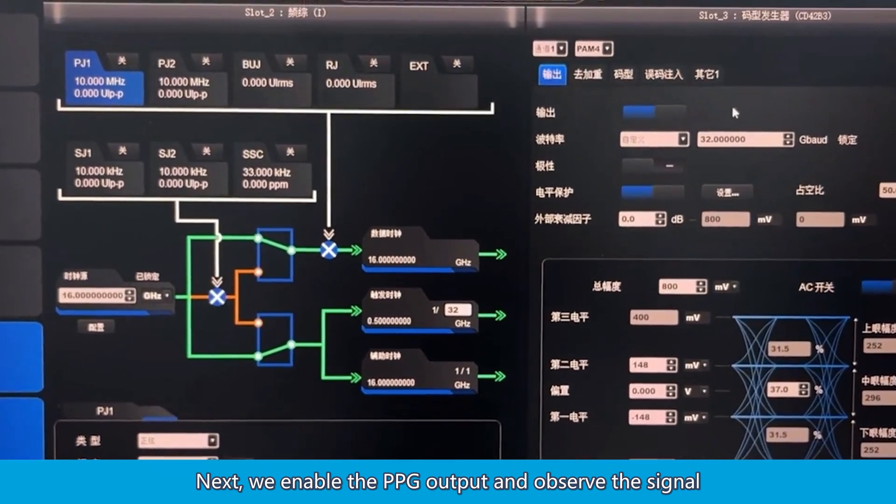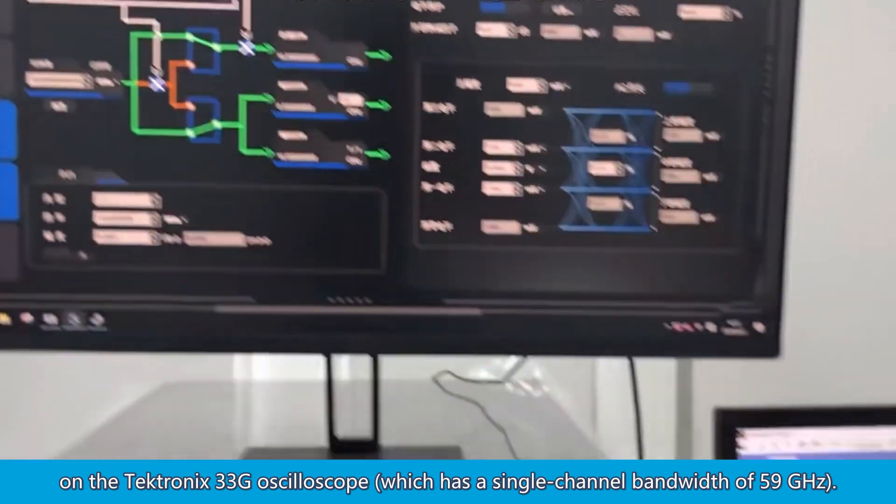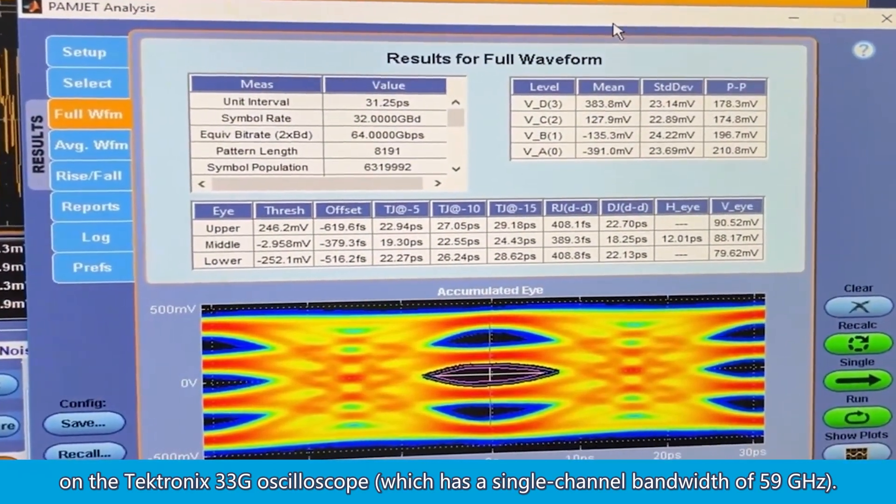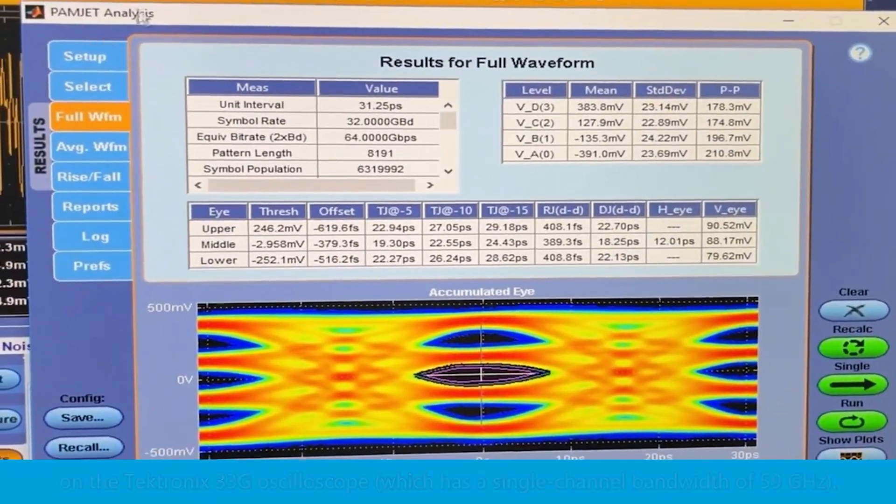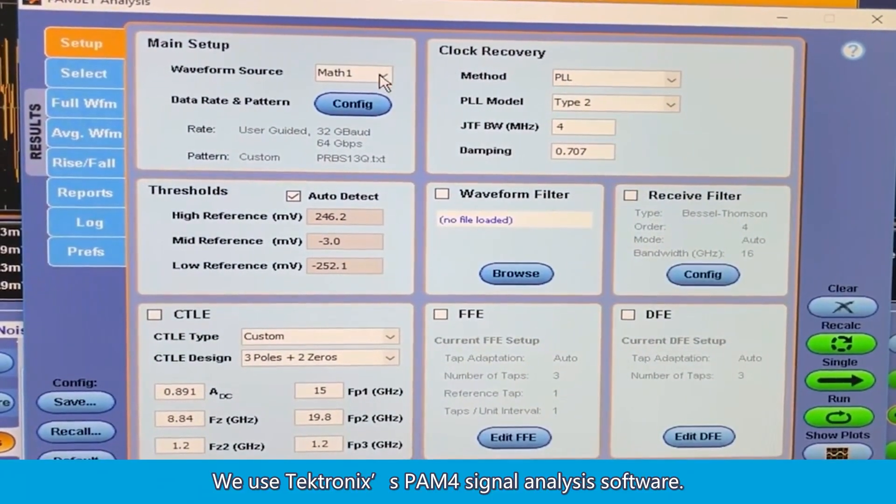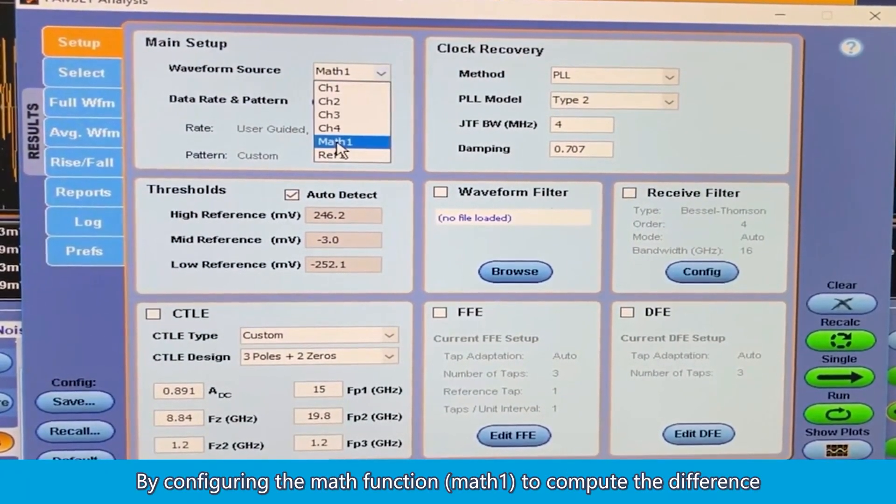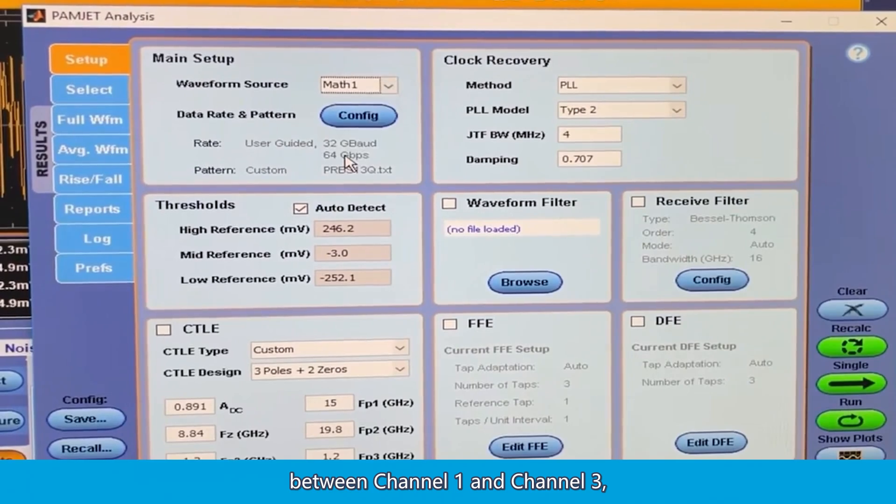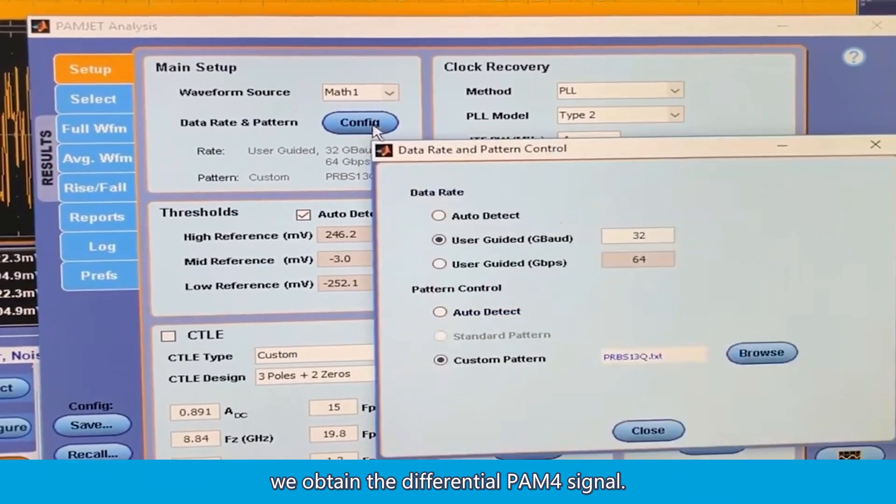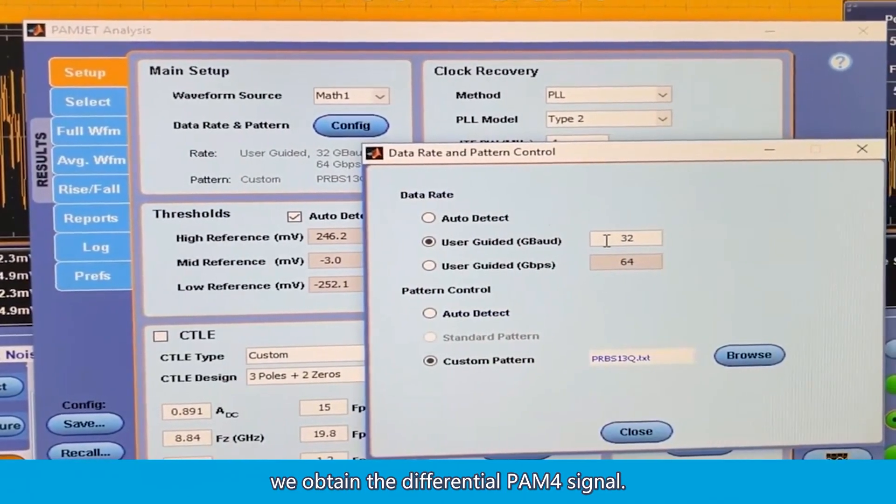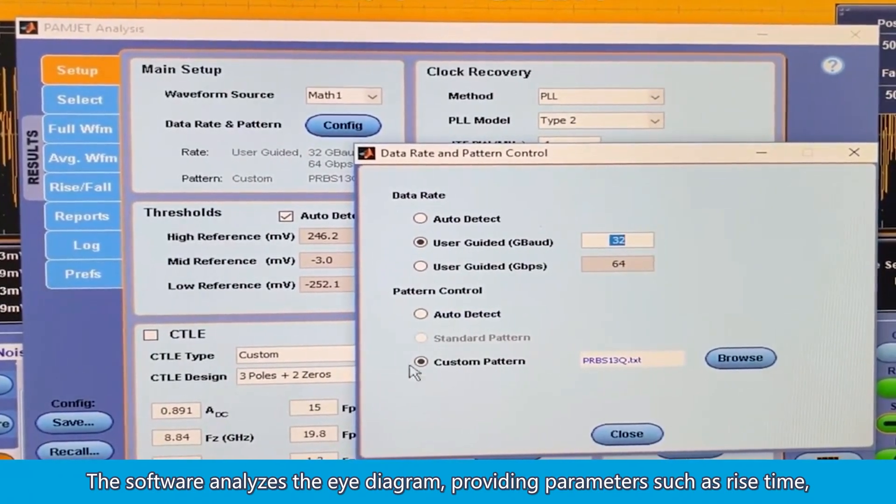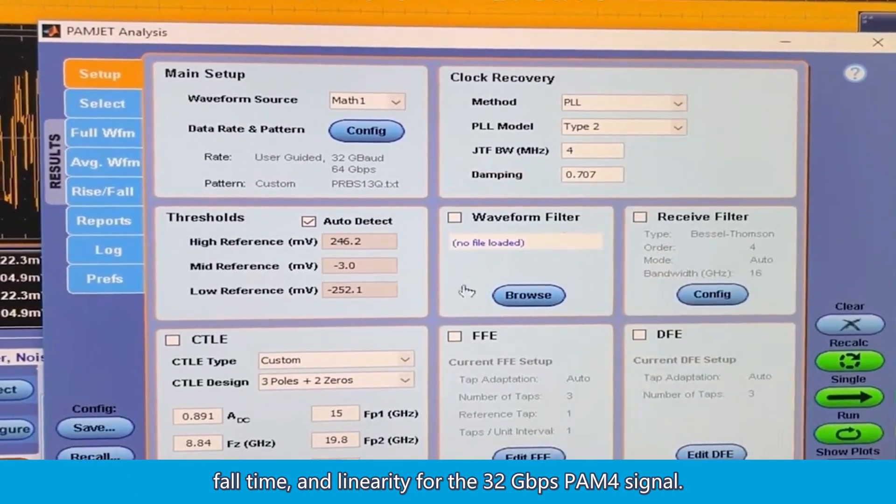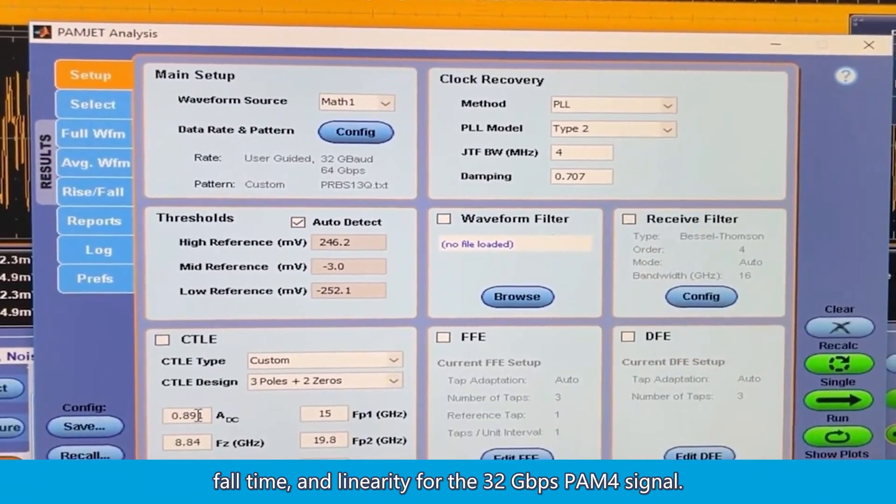Next, we enable the PPG output and observe the signal on the Tektronix 33G oscilloscope, which has a single channel bandwidth of 59 gigahertz. We use Tektronix's PAM-4 signal analysis software. By configuring the math function, math1, to compute the difference between channel 1 and channel 3, we obtain the differential PAM-4 signal. The software analyzes the eye diagram, providing parameters such as rise time, fall time, and linearity for the 32 gigabits per second PAM-4 signal.